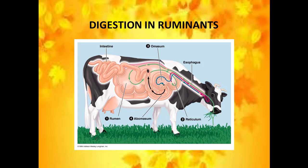Next we will move on to digestion in ruminants. Have you ever seen cattle chewing food? When they are relaxing, they will keep chewing. Cow or any cattle eats grass very quickly, in a hurried manner. In the buccal cavity, the grass is ground into a pulp and sent through the esophagus.